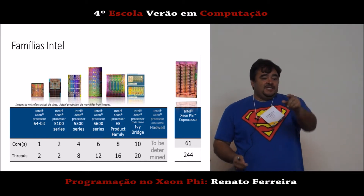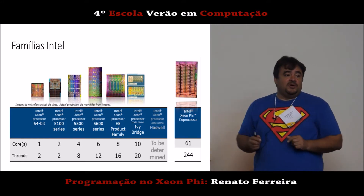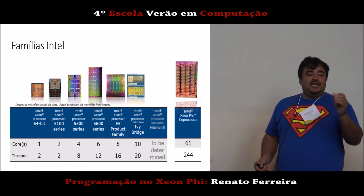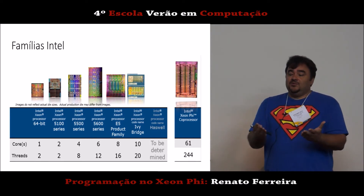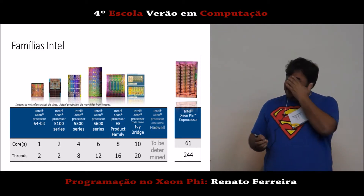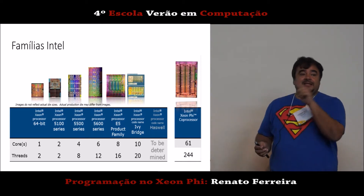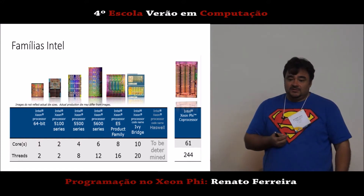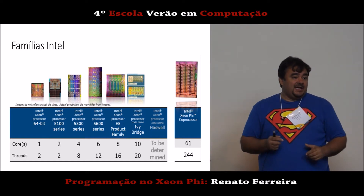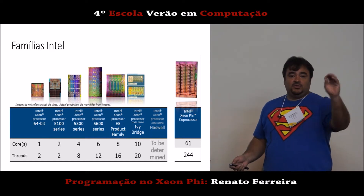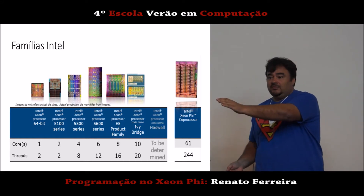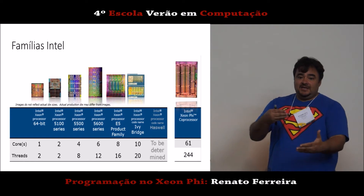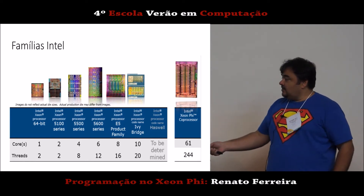O Hyper Threading funciona assim: ele tem um processador, mas tem como se fossem dois contadores de programa. Então ele consegue gerenciar duas tarefas simultâneas. Sabendo que são dois contextos diferentes, não há dependência entre dados de contextos distintos. Por isso ele faz melhor uso das unidades funcionais — não tem stall nos pipelines. Ele pega uma instrução de uma tarefa e uma instrução da outra tarefa, vai escalonando alternado para dentro do processador, e com isso consegue manter o pipeline mais cheio.